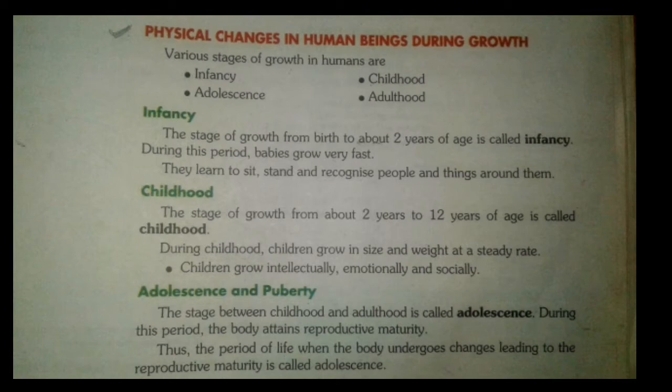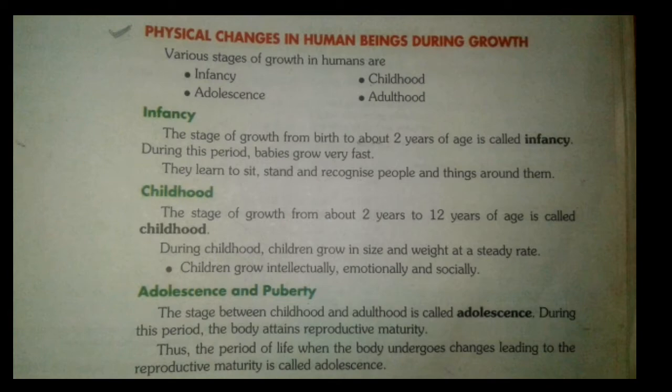What are the changes that occur which show that the child has reached the age of adolescence? Growth and reproduction are two important properties of living organisms. All living organisms become capable of reproducing only after a certain age. We will discuss what kind of changes occur to make them capable of reproduction, including changes in the body of males and females.